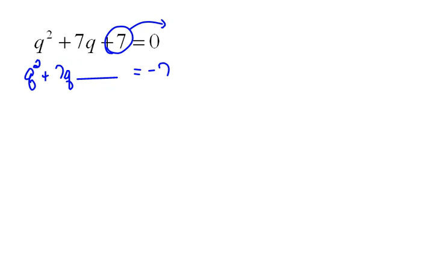Now, remember our procedure is always the same no matter what we have. We're going to take 1 half of the middle term, and half the middle term will be 7 halves. And then we square that number. So 7 halves squared would be 49 over 4. This is what we're adding to both sides. 49 over 4.